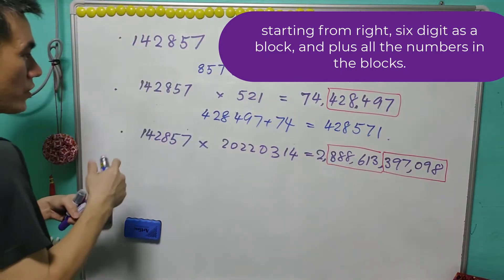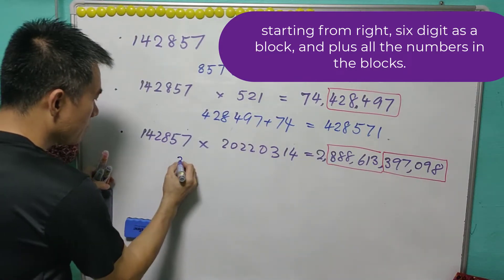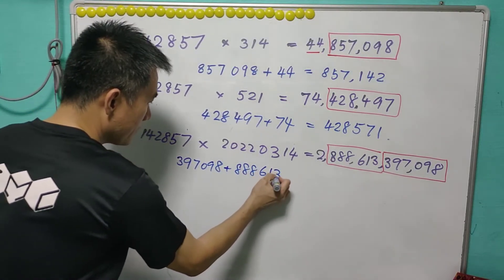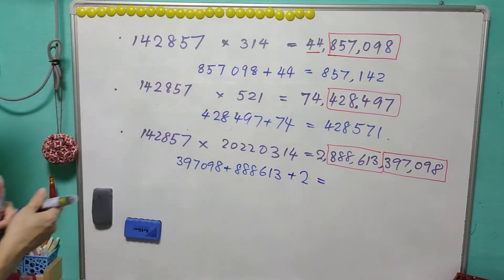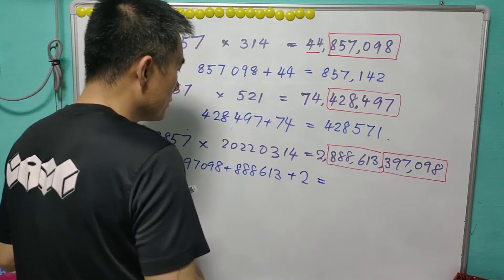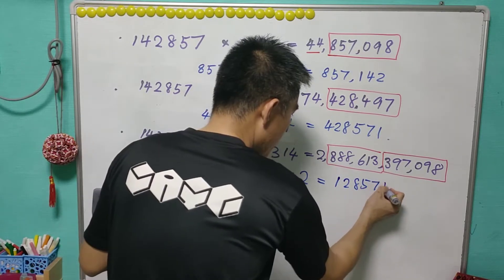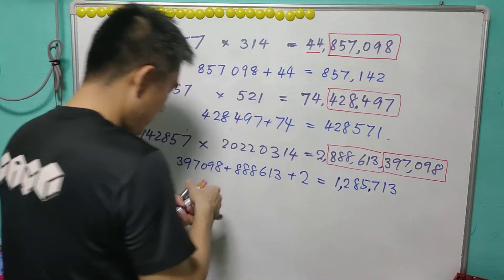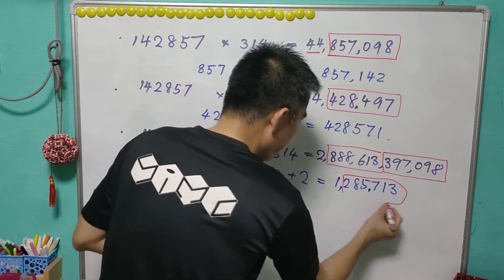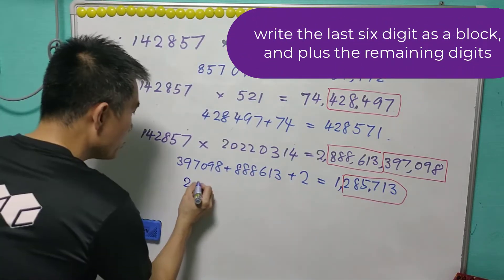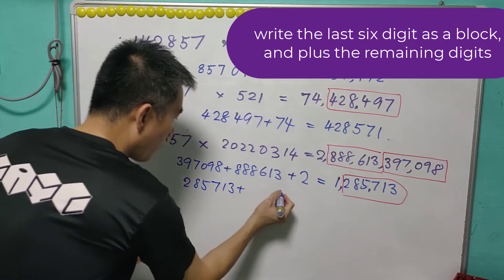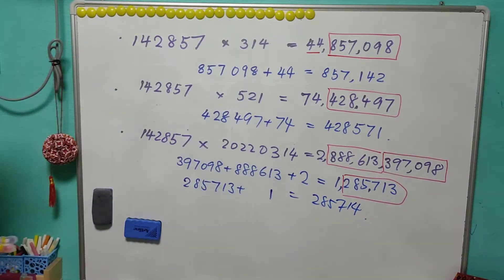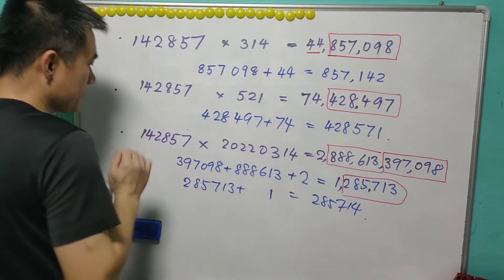So we add 397089 plus 888613 plus 2, which after summing gives 1285704. This is a 7-digit number, so we do one more step: 285704 plus 1 equals 285714. It is still the same 6-digit cyclic number — just another permutation of 142857.